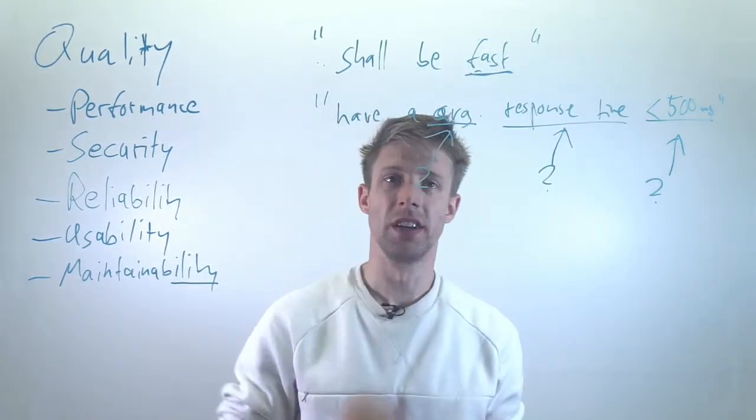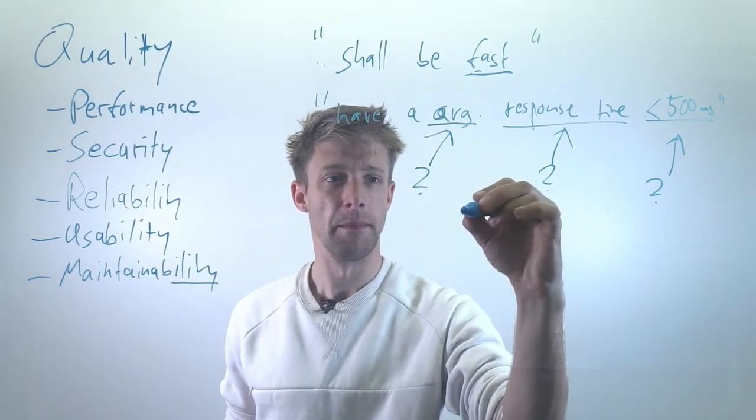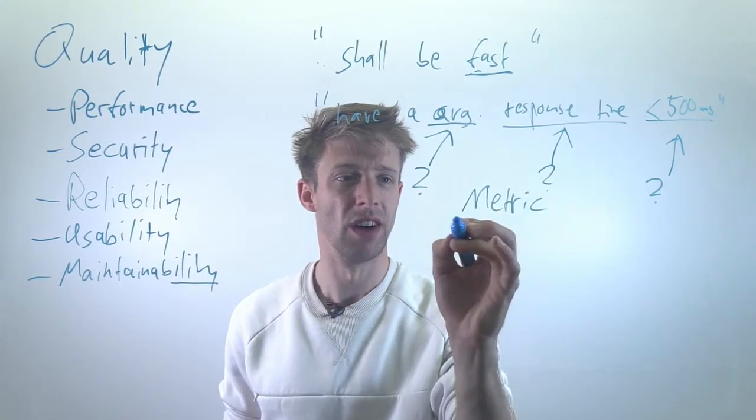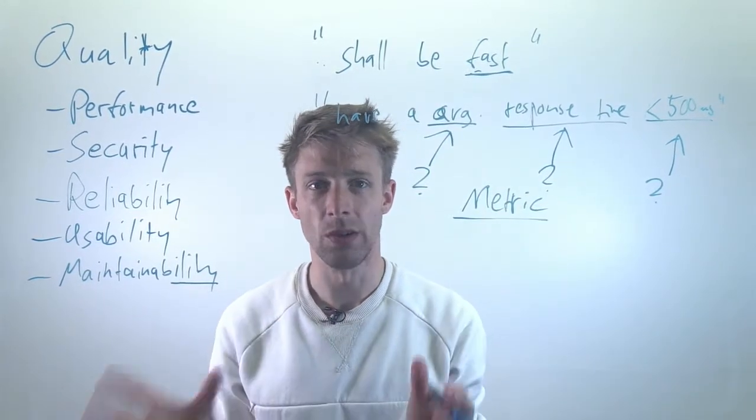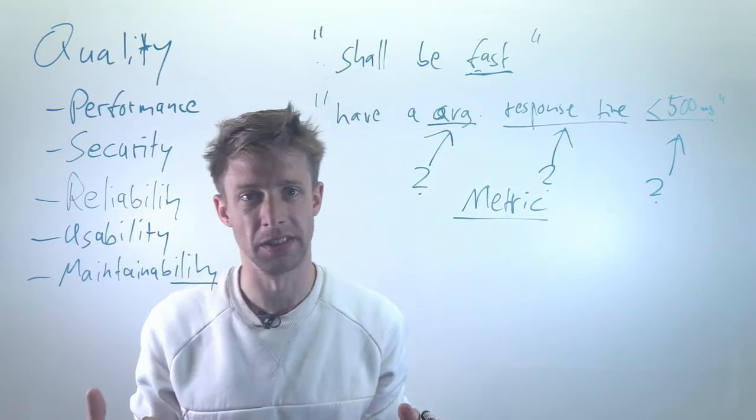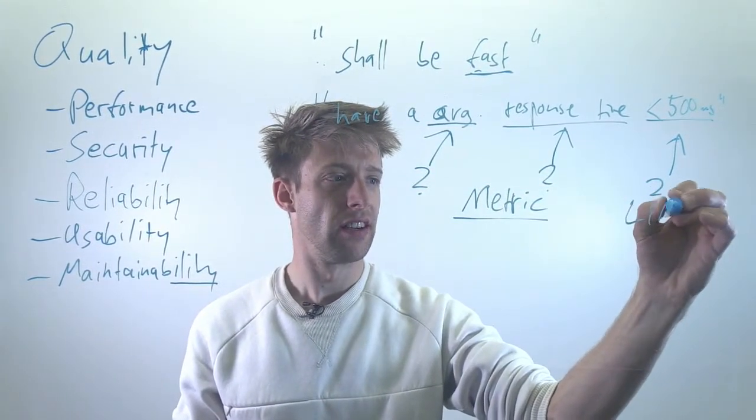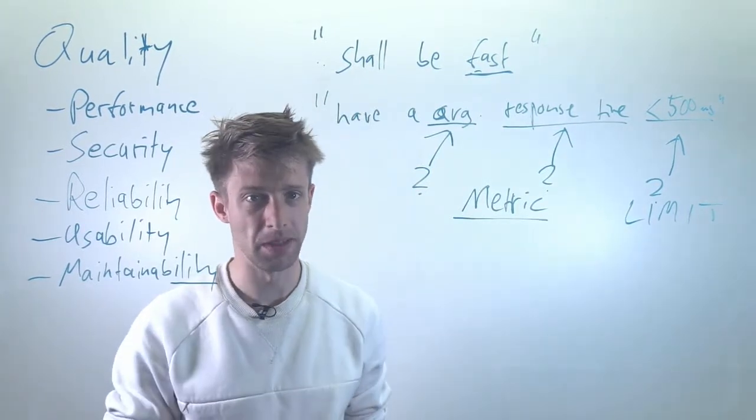So these are things that are quite difficult to describe. Generally this is already better because it gives you some details, but you might want to include some kind of metric and measurement details. So what are you measuring and how do you measure it? What are the experiment conditions, basically, and have a good limit.